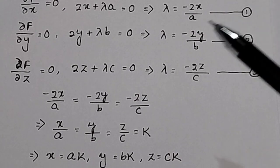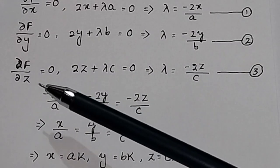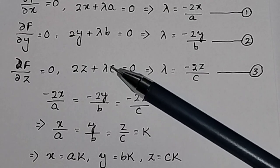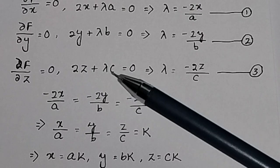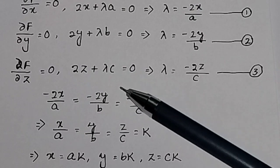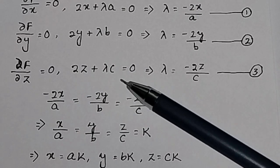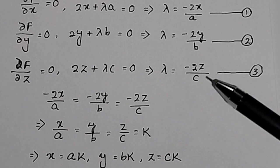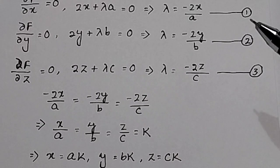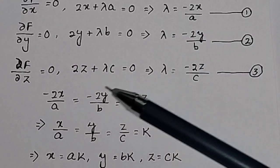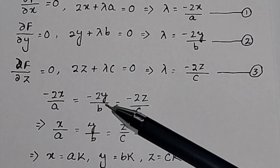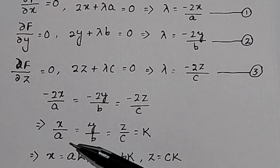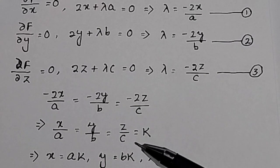Similarly, the partial derivative of the objective function with respect to z gives 2z, and for the constraint it gives λc, so 2z + λc = 0, meaning λ = -2z/c. Since all three equations have the same left-hand side λ, we get x/a = y/b = z/c.